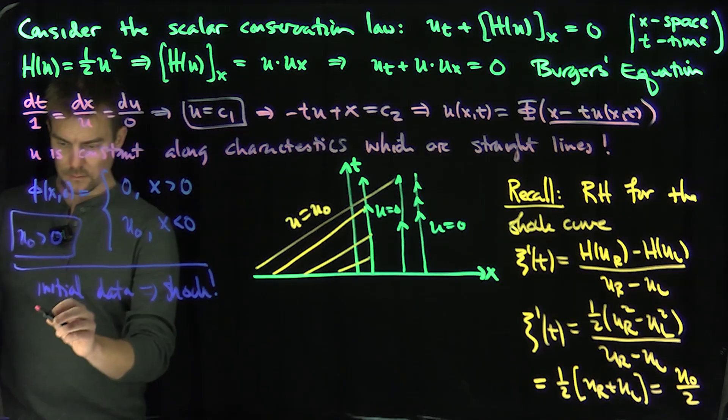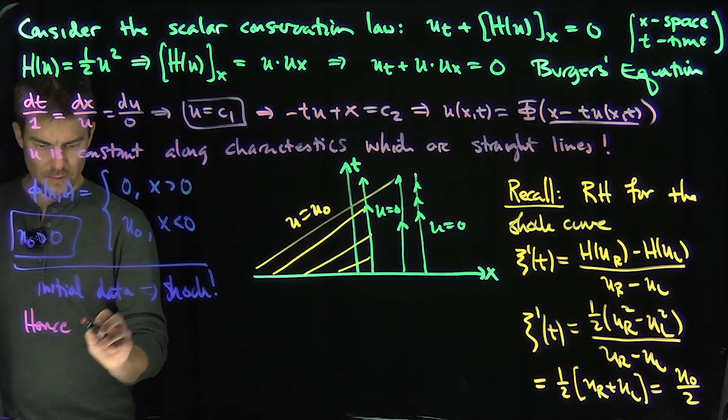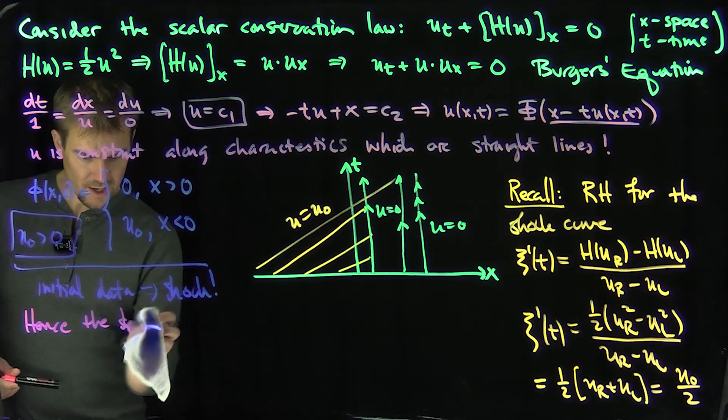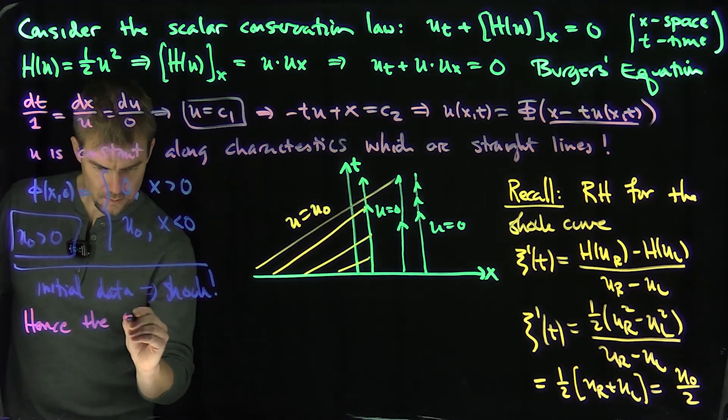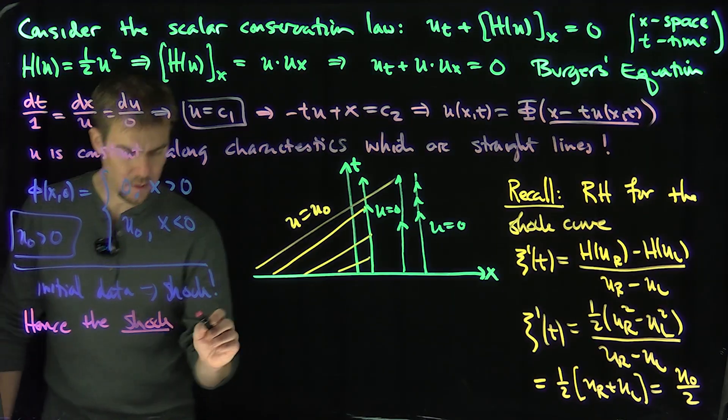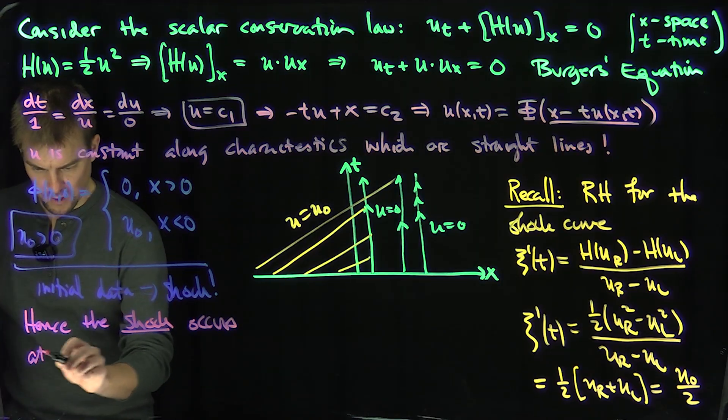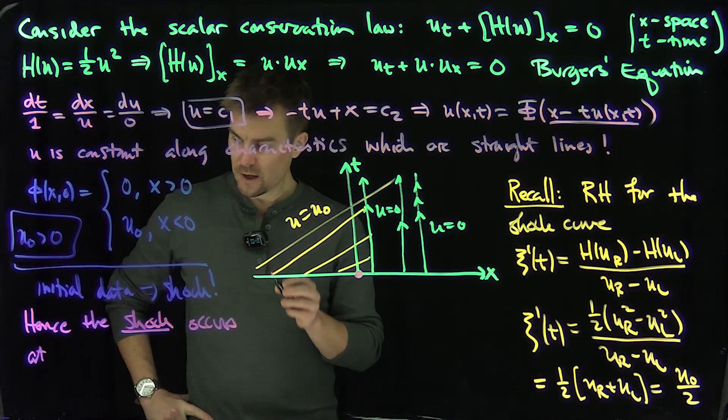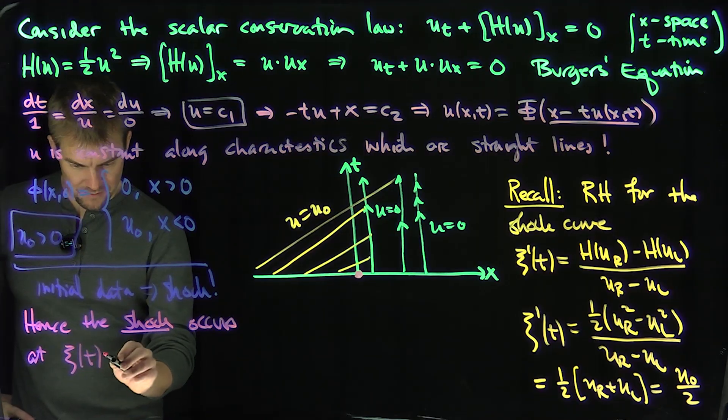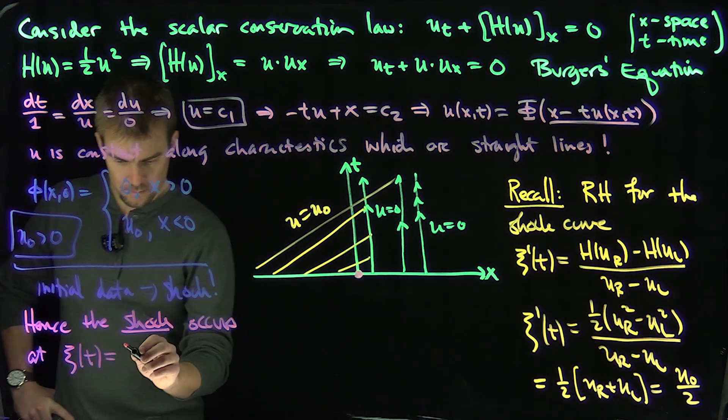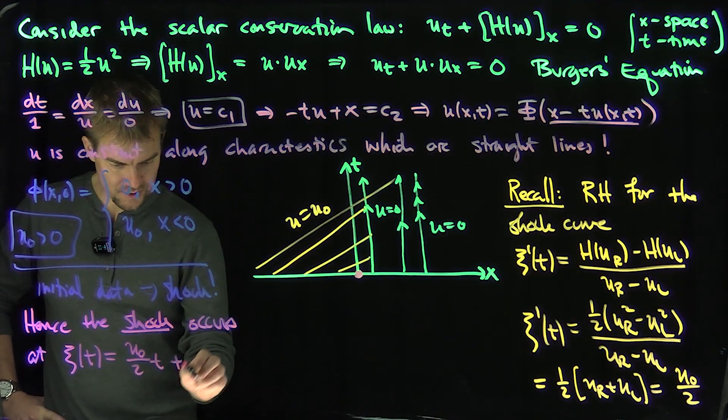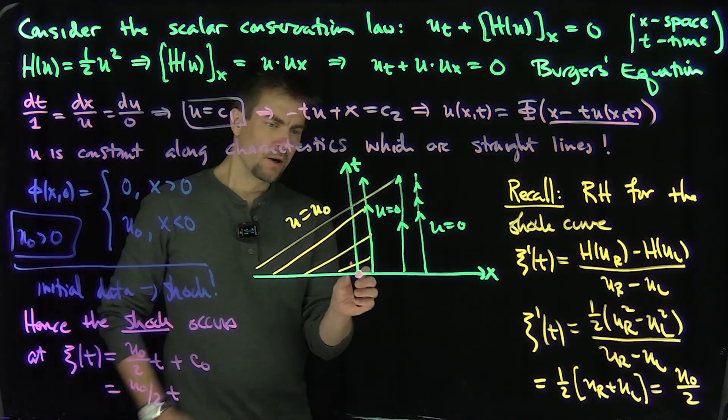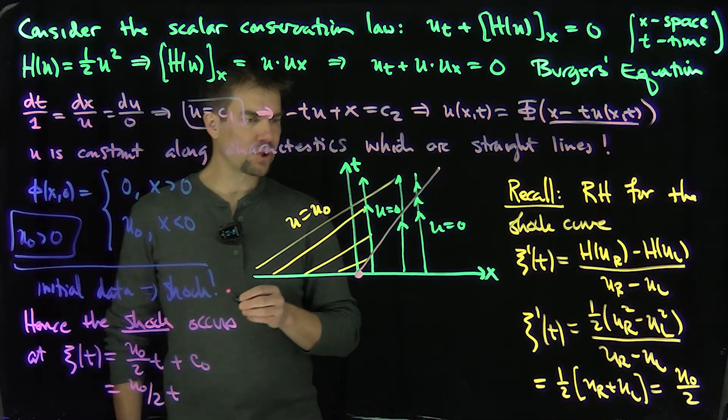So now we've just found the equation for the speed. So hence, the shock occurs at what? Well, where is the initial discontinuity? The initial jump starts at the origin. That's where things go bad. So you have x_c, we could integrate this, and we have x_c prime of t is going to be u_0 over 2 t plus a constant c_0. But c_0 is equal to 0 since it starts at the origin. So this is just going to be u_0 over 2 t.